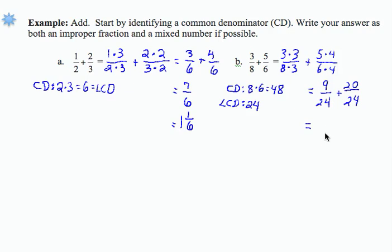I now have a common denominator. I can add the 9 plus the 20 to get 29 over 24. That's my improper fraction.